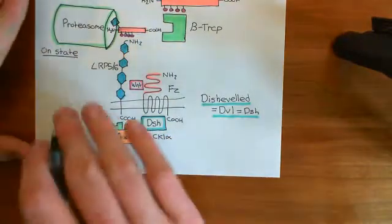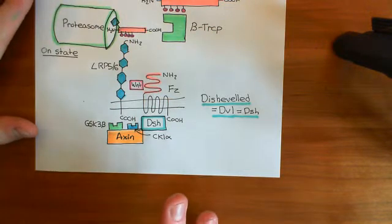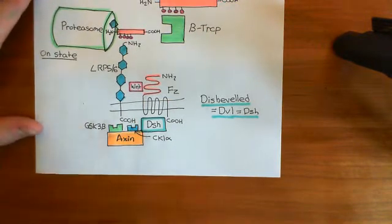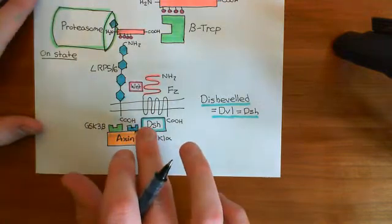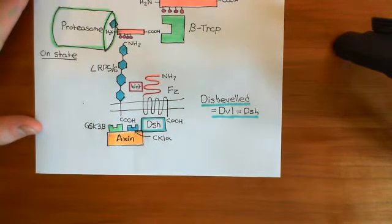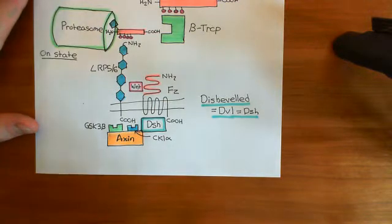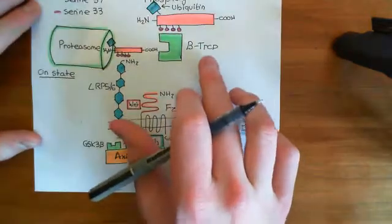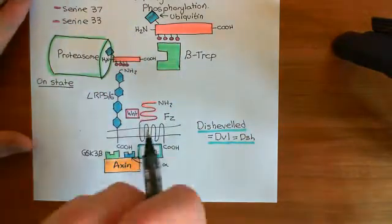That is firstly going to reduce the number of beta-catenin destruction complexes present in the cytoplasm, because we are now isolating components of the beta-catenin destruction complex by binding them to the dishevelled proteins, which have been activated by binding to the frizzled receptor. So the beta-catenin destruction complexes are going to go down in the cytoplasm. They're therefore no longer going to phosphorylate beta-catenin proteins, which means that beta-catenin won't be ubiquitinated by beta-TrCP and therefore won't be destroyed — so they survive.